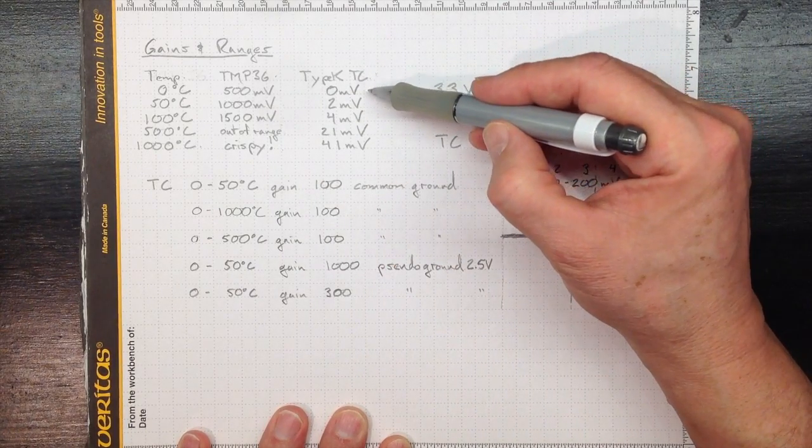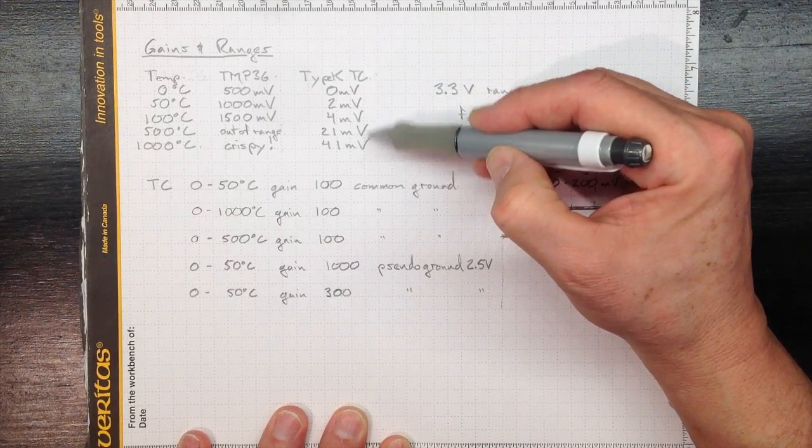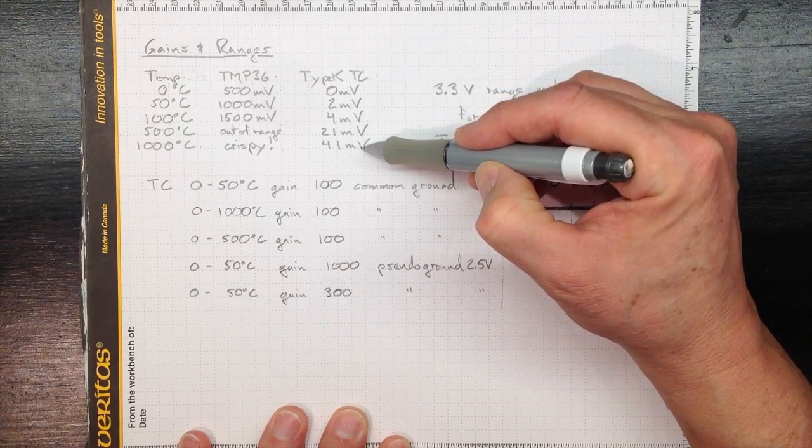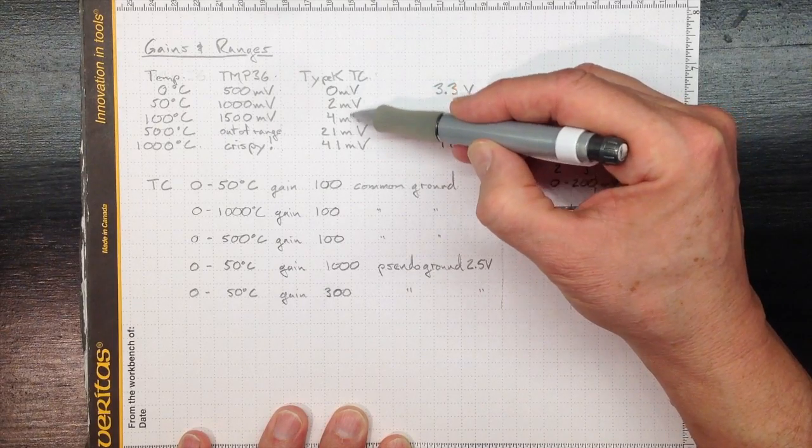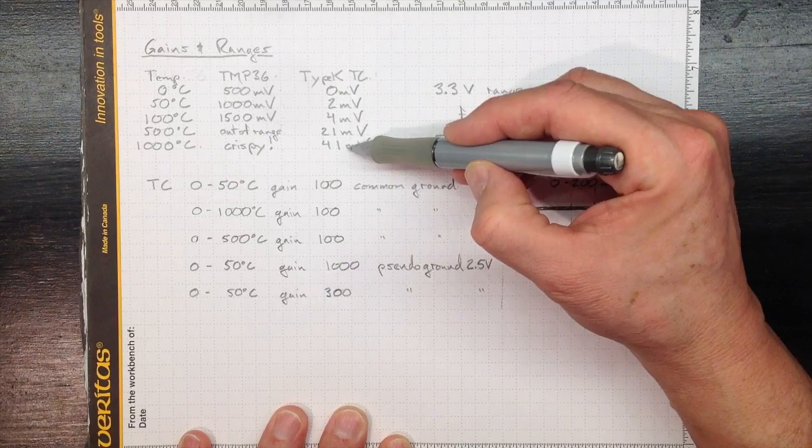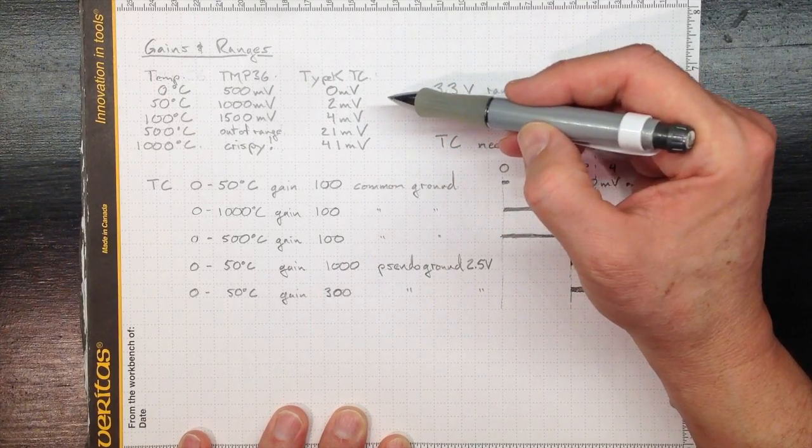A type K thermocouple gives us a much lower voltage output going from zero up to about 41 millivolts over that thousand degrees Celsius range. Depending on where we're trying to measure in that range, down in the low temperatures or up to higher temperatures, we'll choose different input ranges and gains.